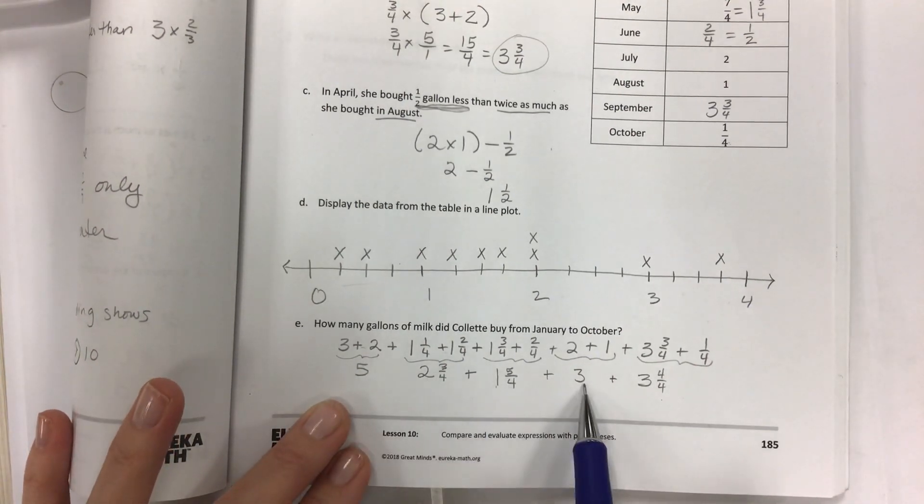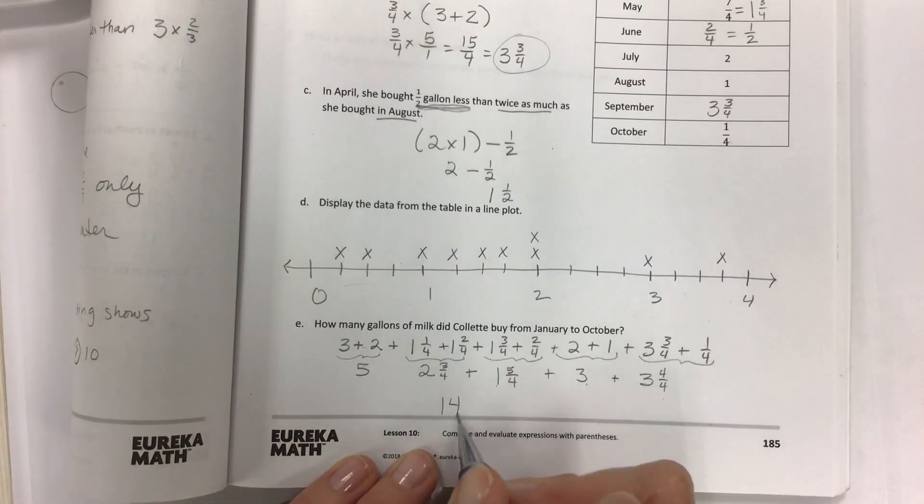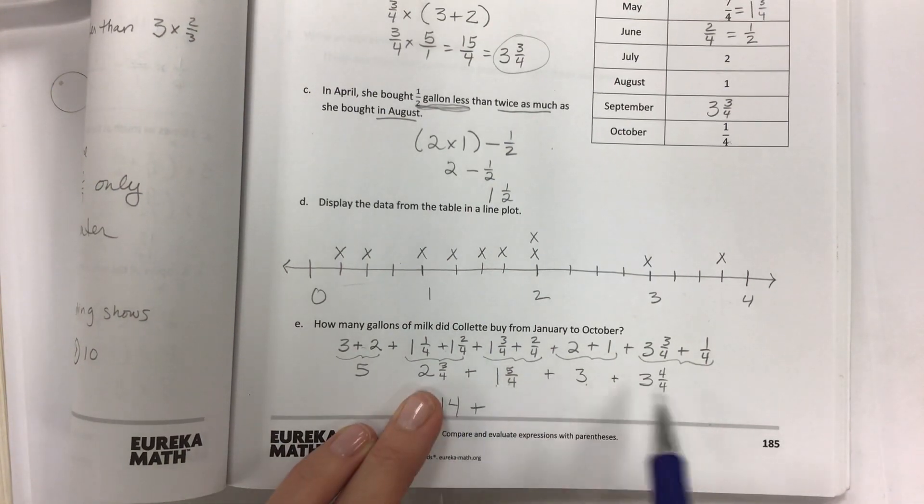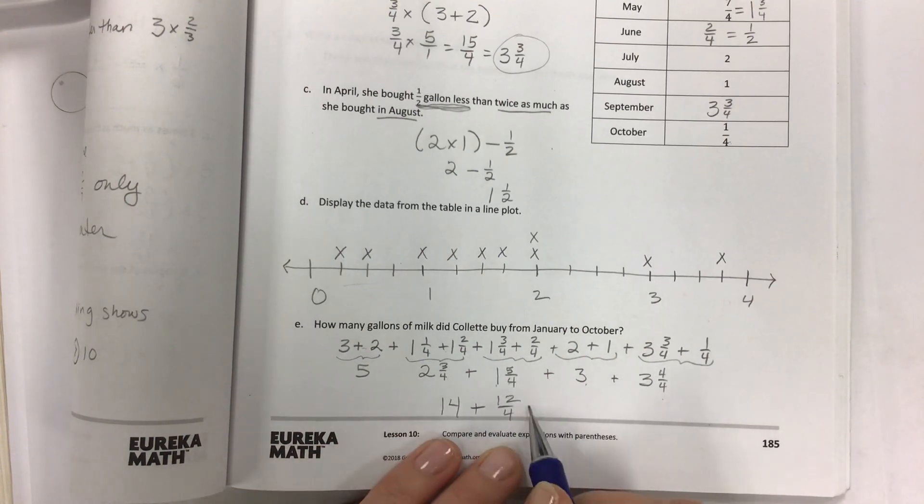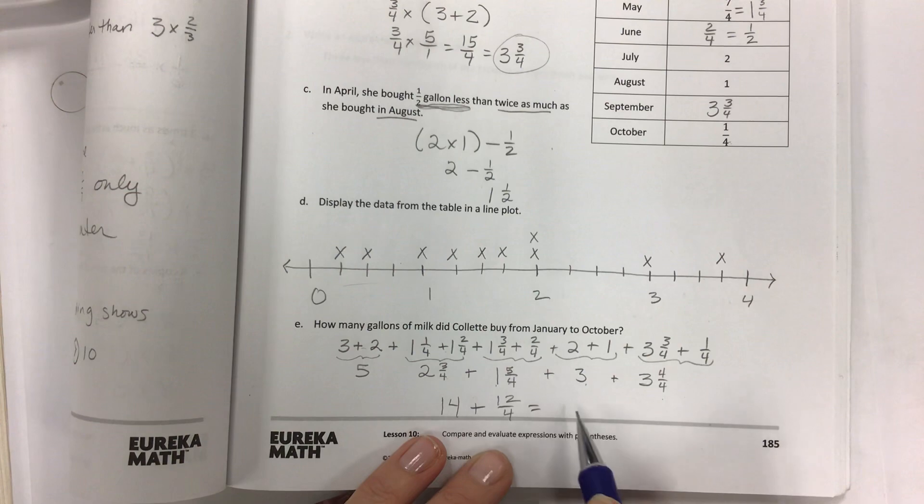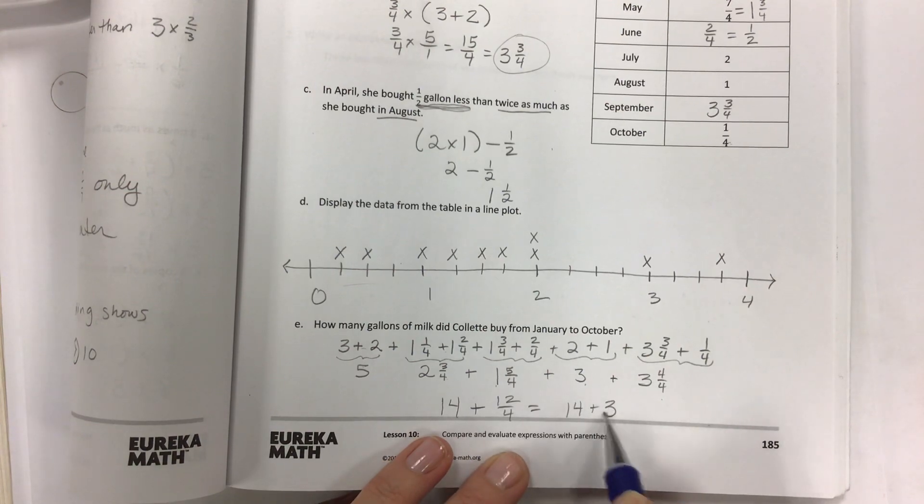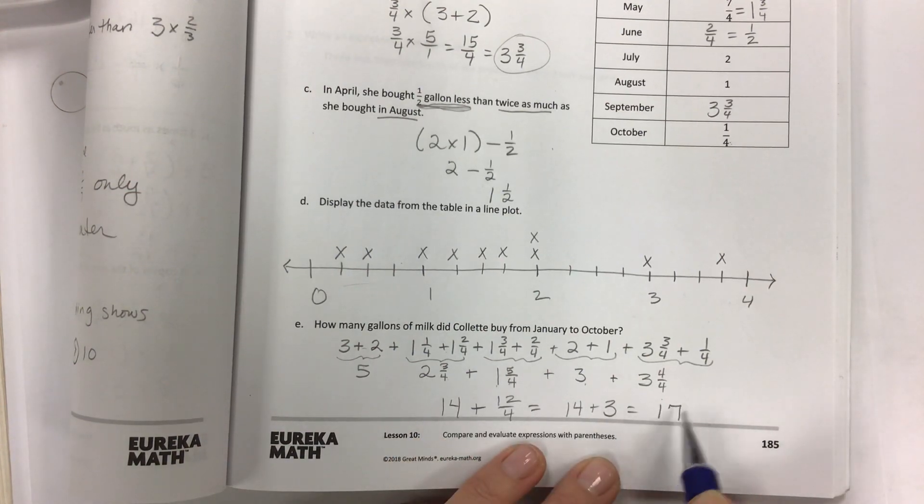At this point you could probably start combining all your whole numbers and fractions. 5, 6, 7, 8, 9, 10, 11, 12, 13, 14 and then all of our fourths - 5, 8, 9, 10, 11, 12. And then that is of course equal to three and then you should end up with 17.